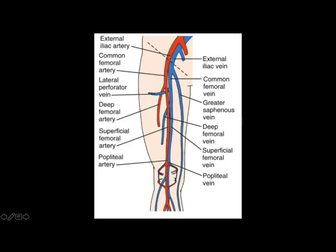Lateral to the external iliac vein we have the external iliac artery, which distal to the inguinal ligament becomes the common femoral artery. If you remember the NAVEL mnemonic from medical school — N-A-V-E-L: nerve, artery, vein, empty, lymphatics — this reminds you of the placement of vascular and nerve structures within the inguinal canal going from lateral to medial.